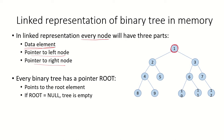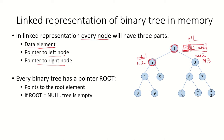So if we have this element represented as a node, it would have the data element, then a pointer to the left node. The address of this left node is stored as part of this node. So node n1 is linked to node n2 through this address, meaning n1 points to n2 as its left node. Similarly, if n3 is the right node of n1, then the address of n3 comes as part of node n1, giving it the data element, a pointer to the left node, and a pointer to the right node.